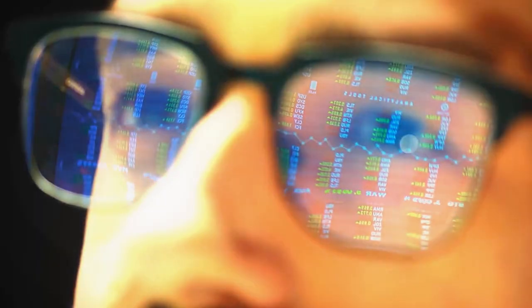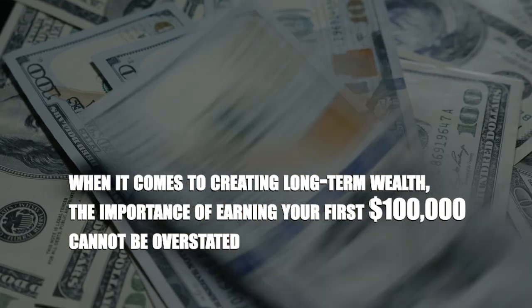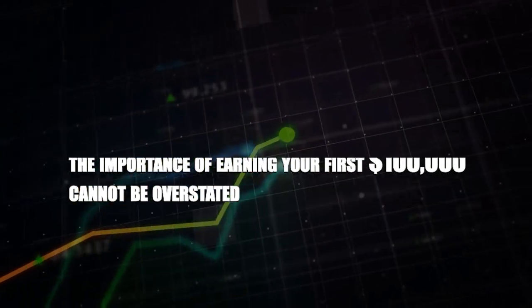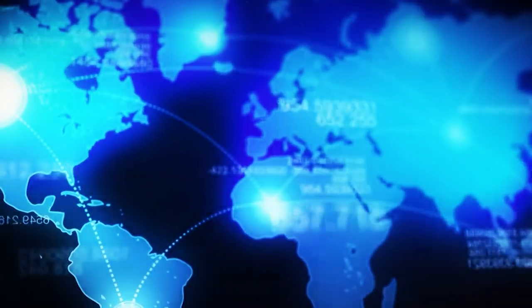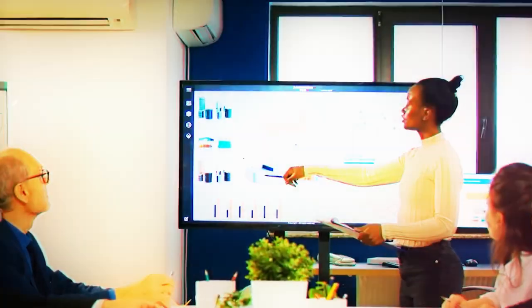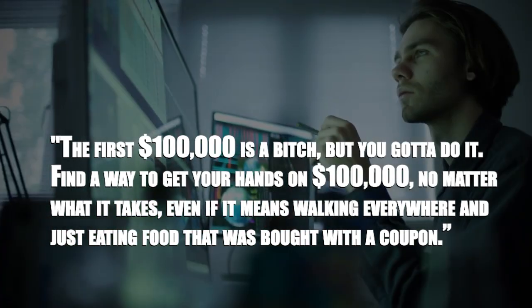The following is the best piece of advice that Munger offers to youngsters who wish to start investing. He states that when it comes to creating long-term wealth, the importance of earning your first $100,000 cannot be overstated. The late 1990s saw Charlie Munger, the renowned investor and vice chairman of Berkshire Hathaway, make the astute statement: The first $100,000 is a bitch, but you gotta do it.